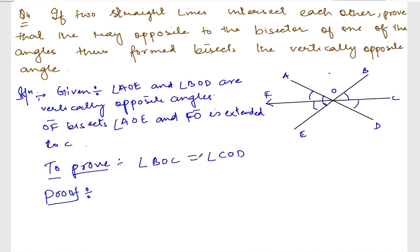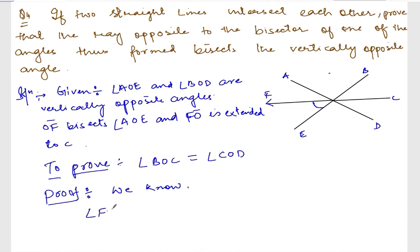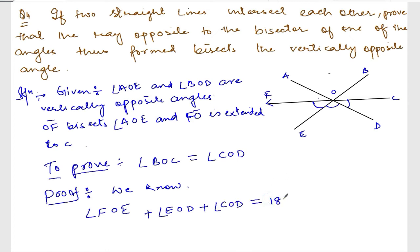Let us start our proof. We know that angle FOE plus angle EOD plus angle COD equals 180 degrees, since these angles lie on a straight line. This is equation number one.